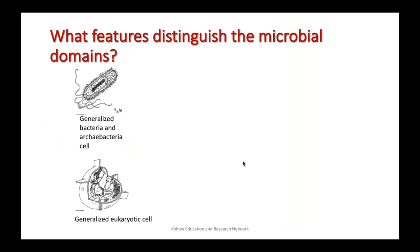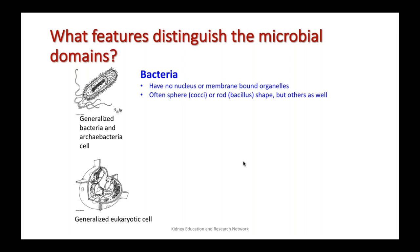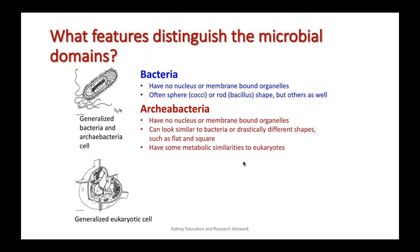Let's look at what features other than just the presence of a definable cell wall distinguish the microbial domains. Bacteria have no nucleus or membrane-bound organelles. They can be round, elongated or rod-shaped, but there can also be other shapes of bacteria such as filamentous bacteria.